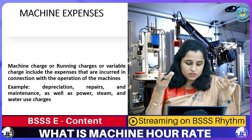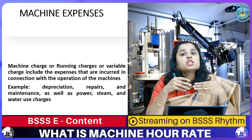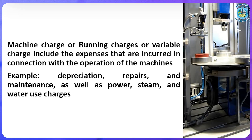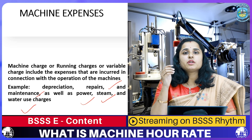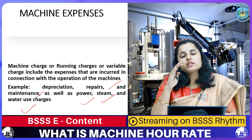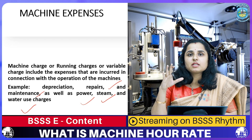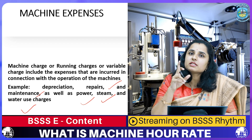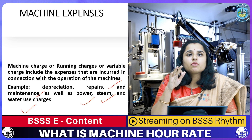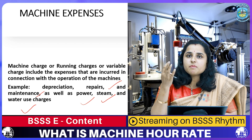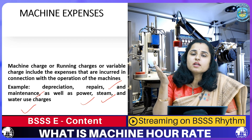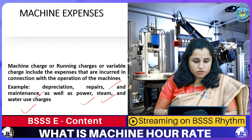Machine expenses are also called running expenses or variable charges — these are incurred when the machine is operating. Examples include repairs, maintenance, power, steam, and water used by the machine. For depreciation, if the company charges a fixed depreciation per hour it is a standing charge; if depreciation is calculated on a variable per-hour basis, it is a variable charge.